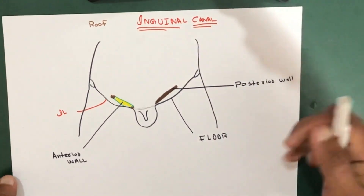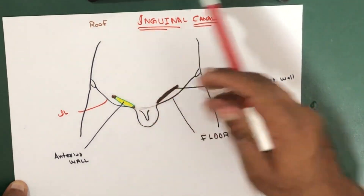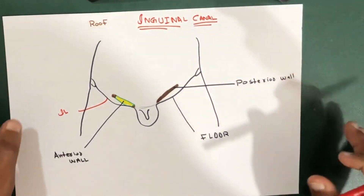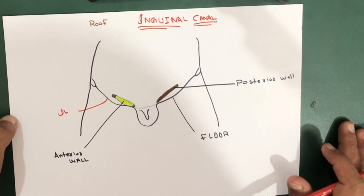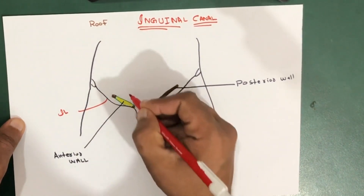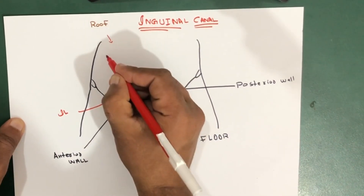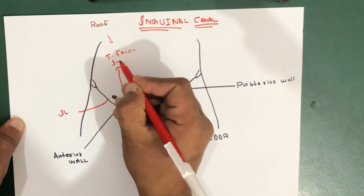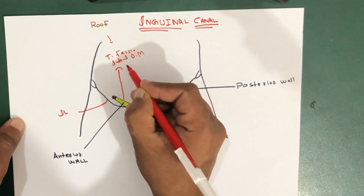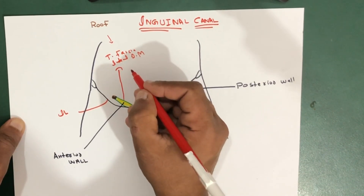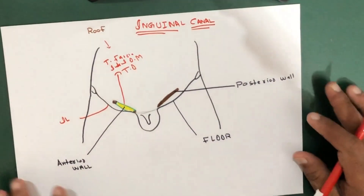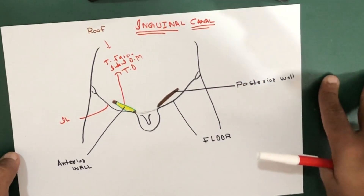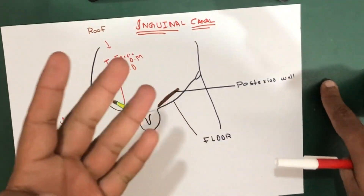For the boundaries, we have four: anterior wall, posterior wall, floor, and roof. Starting with the roof — which is towards the main abdominal wall above — the roof is formed by three main structures: transversalis fascia, internal oblique muscle, and transversus abdominis muscle.